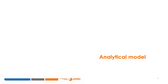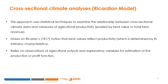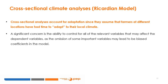Now let us look at the analytical model. As indicated previously, the cross-sectional climate analyses are based on the Ricardian model. This approach uses statistical techniques to examine the relationship between cross-sectional climate data and measures of agricultural productivity, proxied by land value or total farm revenue. This draws on Ricardo's 1817 notion that land values reflect productivity, which is determined by its intrinsic characteristics. It relies on observations of agricultural outputs and explanatory variables for estimation of the production or profit function. Cross-sectional analyses account for adaptation, since they assume that farmers at different locations have had time to adapt to their local climate.